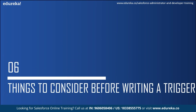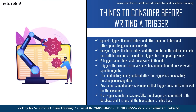Now let us take a look at things to consider before implementing a Salesforce trigger. First, upsert triggers can fire both before and after insert or before and after update as appropriate. Next, merge triggers can fire both before and after delete for deleted records, and both before and after update for updating records. Third, a trigger cannot have a static keyword in its code. Also, triggers that execute after a record has been undeleted only work for specific objects. The field history is only updated after the trigger has successfully finished processing. Any callout should be asynchronous so that triggers do not have to wait for the response. And finally, if a trigger completes successfully the changes are committed to the database; if it fails, all transactions are rolled back — meaning it reverts to what it was before.